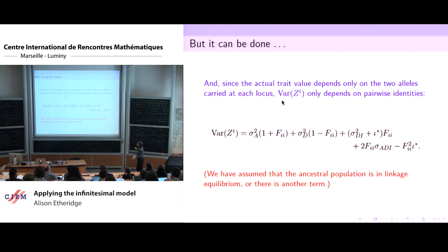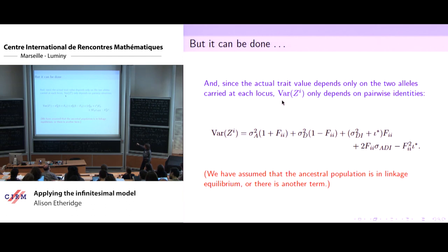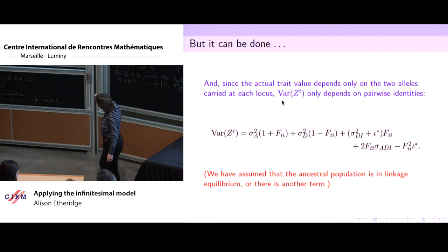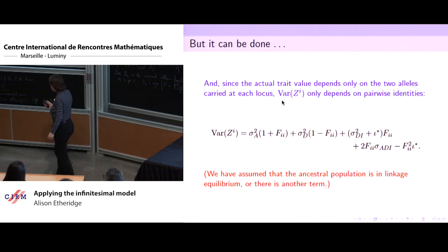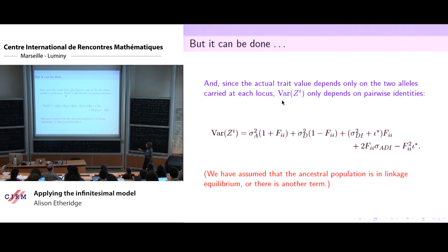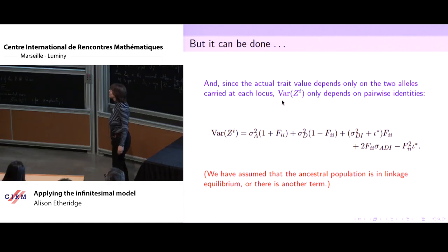I'm not going to show you the expressions for the variance of A+D on its own, or R+S on their own. But since the actual trait value can only depend on the two alleles carried by the individual at each locus, the variance of the particular trait value becomes considerably simpler and can only depend on pairwise identities, reducing to an expression in which dominance variance, sigma_AD, and other terms still enter. Because we assume the ancestral population is in linkage equilibrium, we're missing a term that appears in classical quantitative genetics.